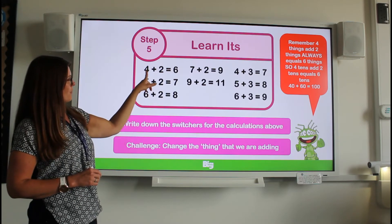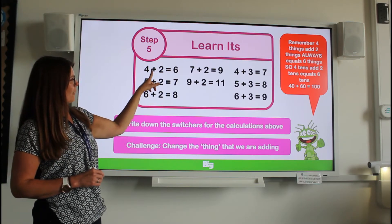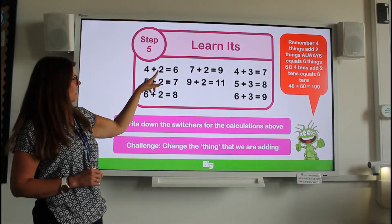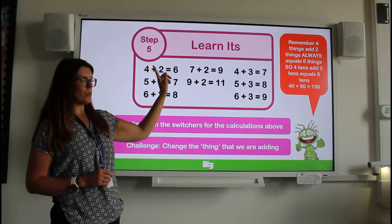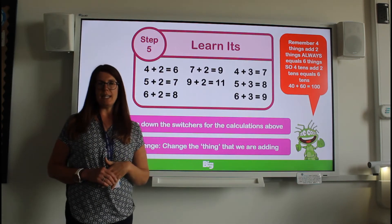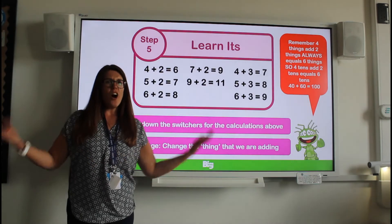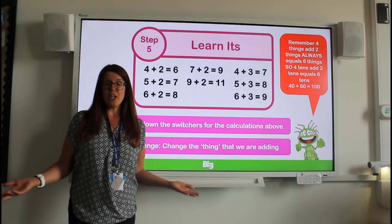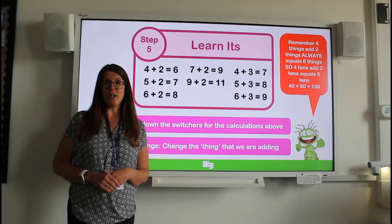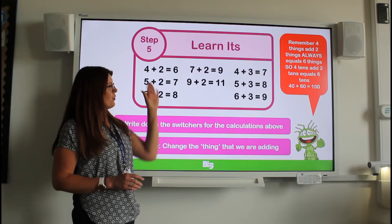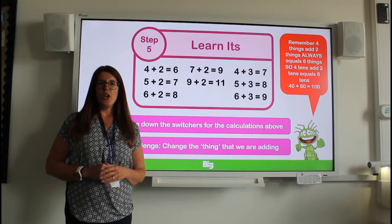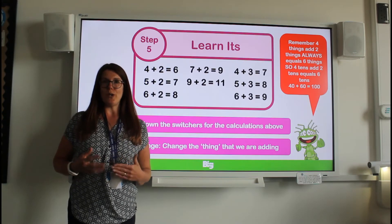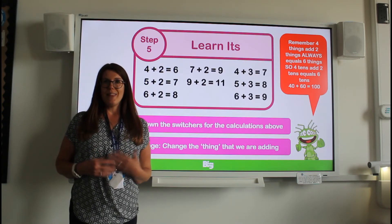So instead of four plus two equals six, you would do four tens plus two tens equals six tens. That opens up loads more calculations that you know the answer to, because if you know these learn-its you also know their switchers and you also know the tens.